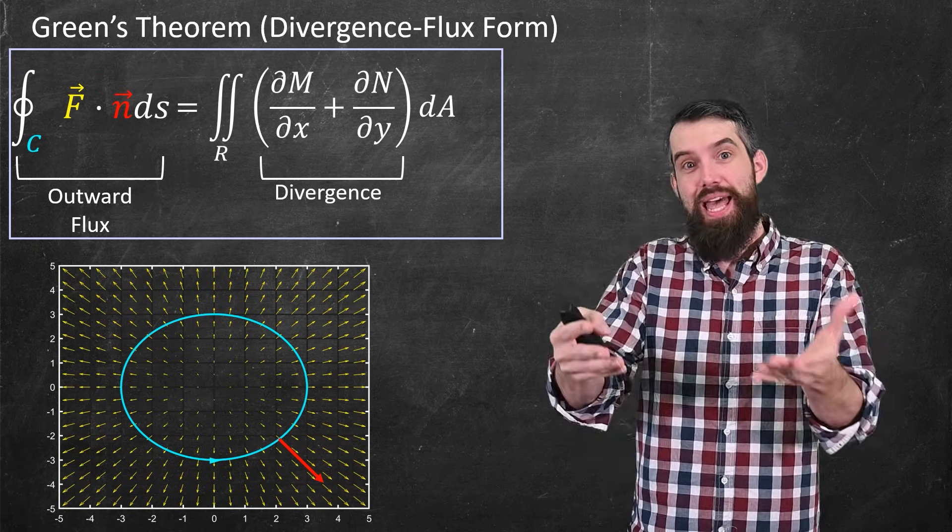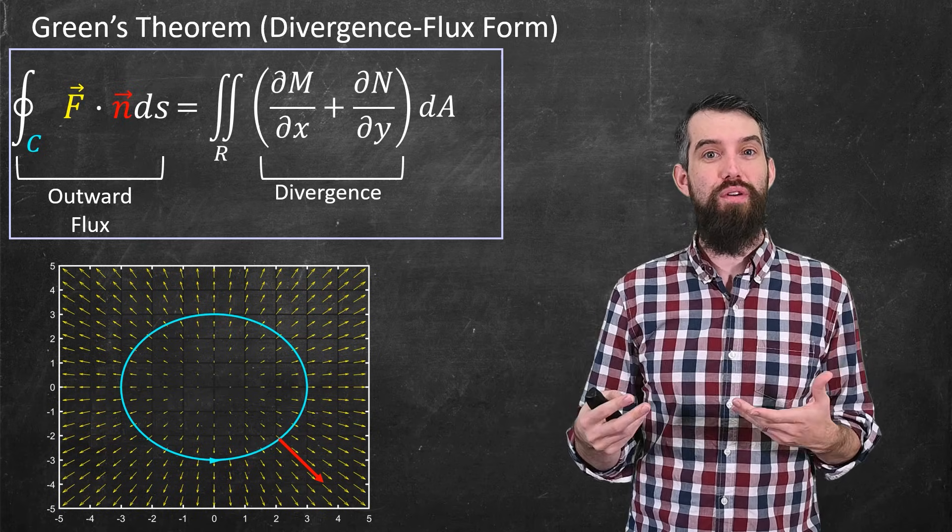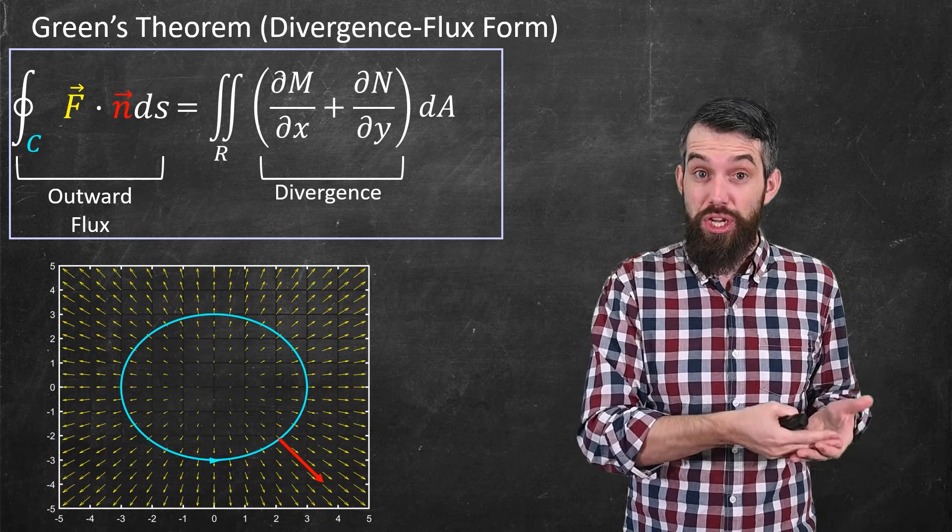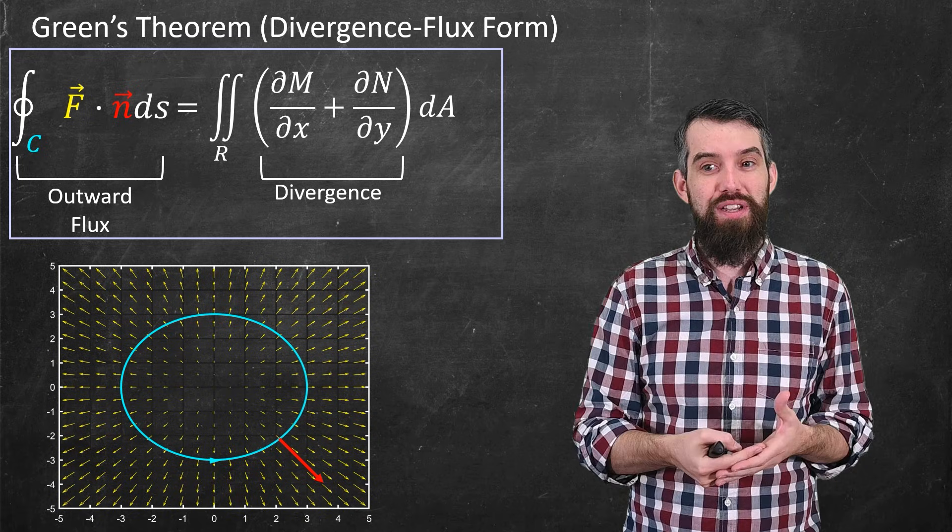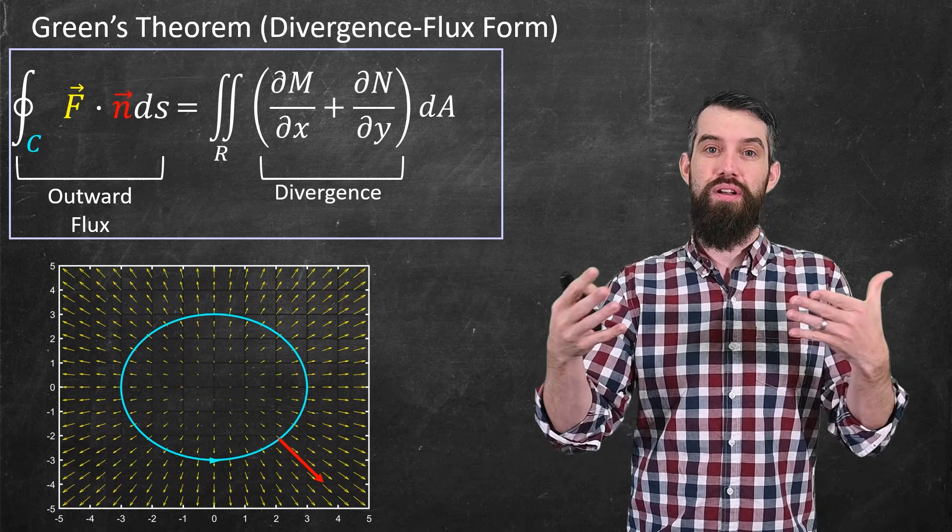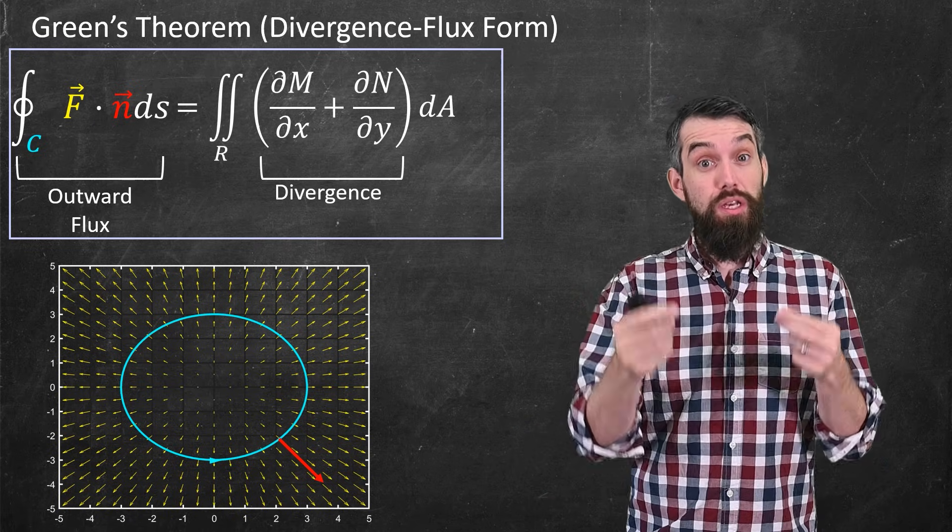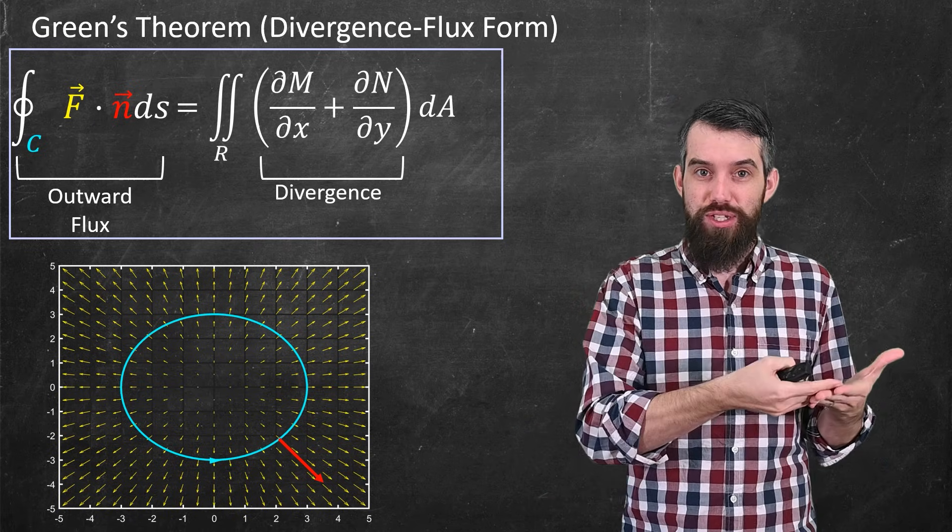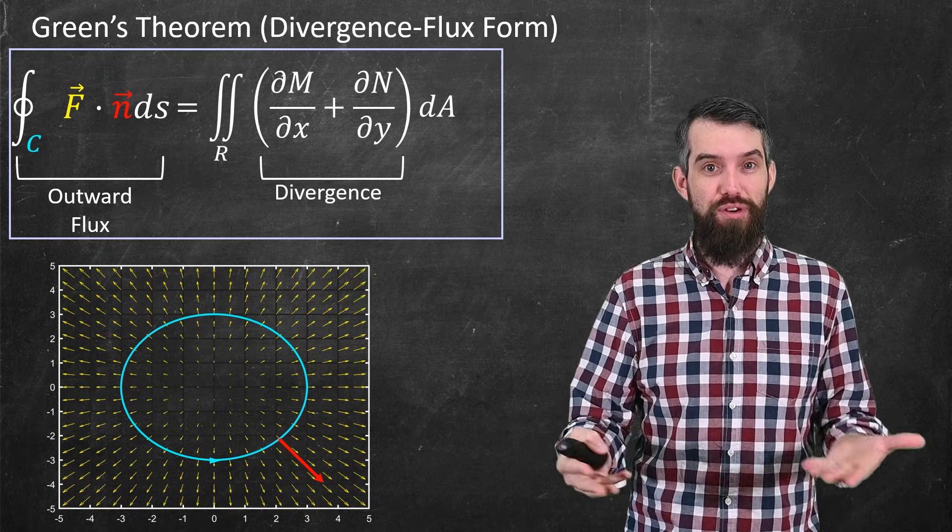And so adding everything up would just make that cancel. So when you get rid of all the interior cancellation of this divergence, what's left is that crossing out the final boundary which gives us the outward flux.